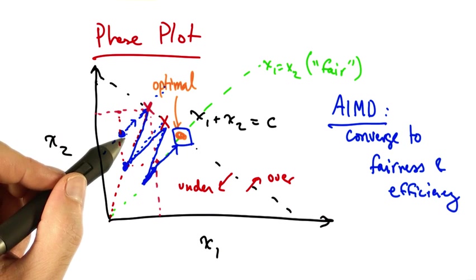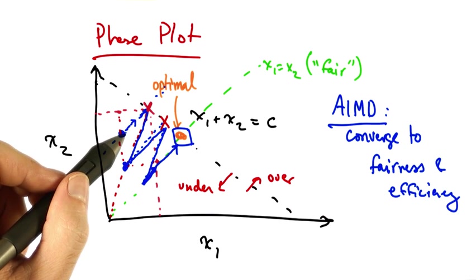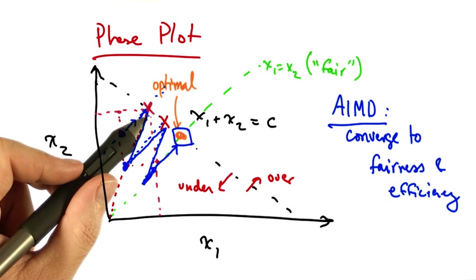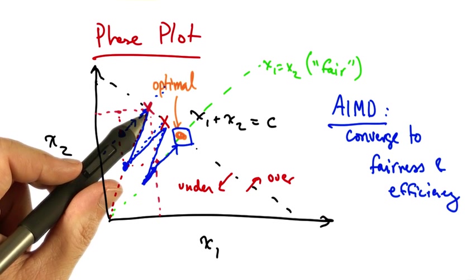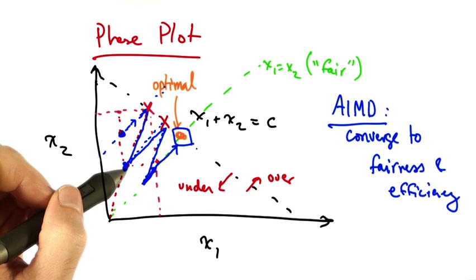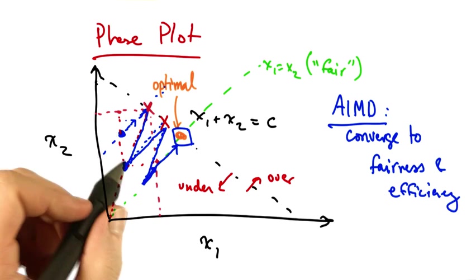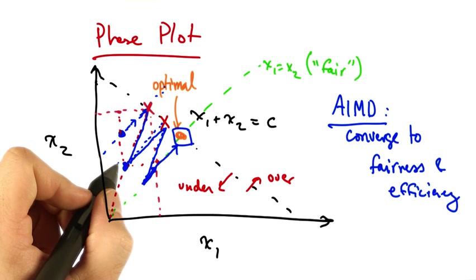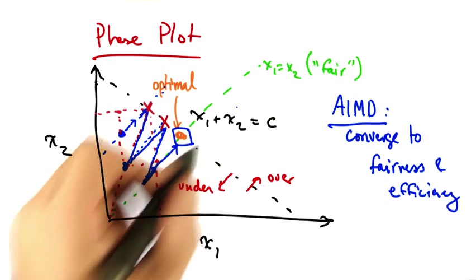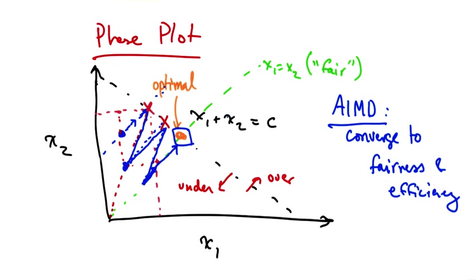To think about this a bit more, you can see that every time additive increase is applied, that increases efficiency. Every time multiplicative decrease is applied, that improves fairness because every time we apply multiplicative decrease, we get closer to this x1 equals x2 line.